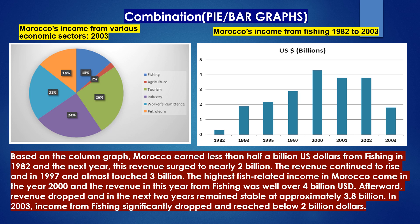Afterward, revenue dropped and in the next two years remained stable at approximately 3.8 billion. In 2003, income from fishing significantly dropped and reached below 2 billion dollars.